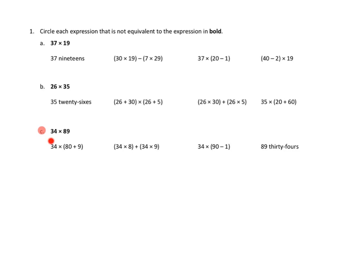Let's take a look at our first one: 34 times 80 plus 9. Is that the same as 89? Well, sure. 80 plus 9 is the same, and we have the same operation. Once we figure out 89, we're going to multiply it by 34. I think this is the same. We're supposed to circle each expression that is not equivalent. I'm going to draw a line through this because we are not going to circle that because that is equivalent.